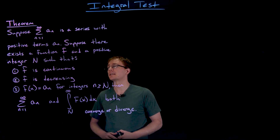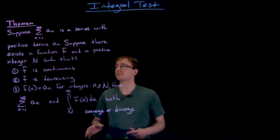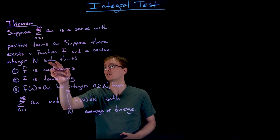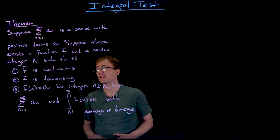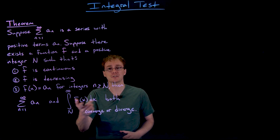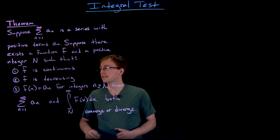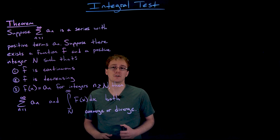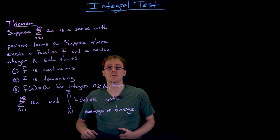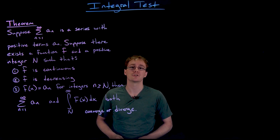The theorem that gives us the integral test says: suppose we have the series, the sum from n equals one to infinity of a sub n, and the terms in our series are all positive. Further, we suppose there exists a function f and a positive integer N such that three conditions are met. First, f must be continuous. Second, f must be decreasing. Third, f must give us the terms in our series — that is, plugging an integer n into f gives us the nth term, at least for all n greater than some capital N, or it eventually works after a certain point.